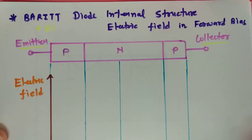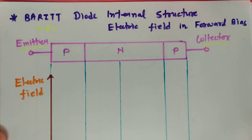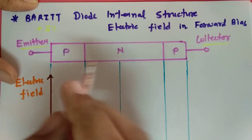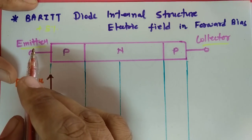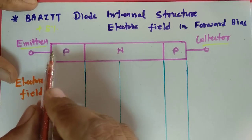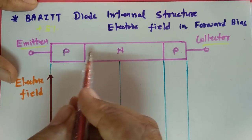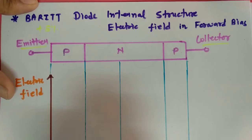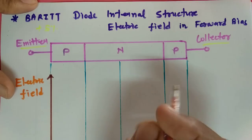For example, if the collector region is 1 micrometer, then the emitter side P-type material will be 1.05 micrometers. The N-type region sandwiched between P and P is larger, and this is related to the punch-through effect. Even though there are three layers internally, it remains a two-terminal device — only the emitter and collector terminals are used for biasing.